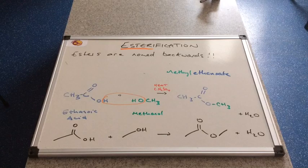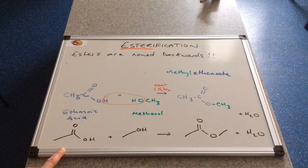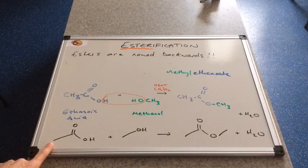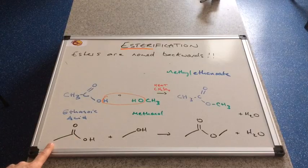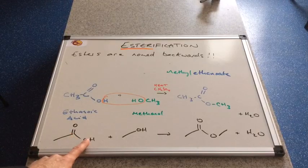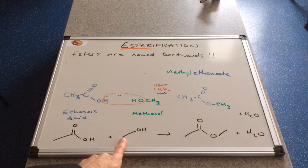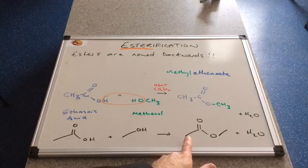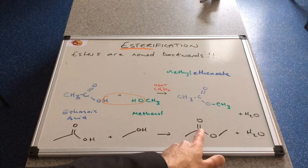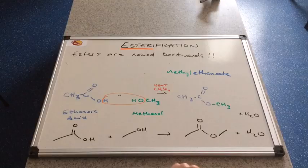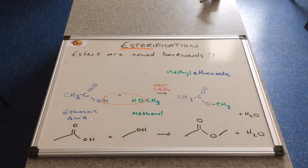You can see at the bottom of the whiteboard I've added the skeletal formula version of the equation. So ethanoic acid has this skeletal formula: CH3, C double bond O, OH. Methanol would look like this: CH3, OH. Here's the ester: CH3, C double bond O, single bond O, CH3. And obviously we'll just put H2O for water.